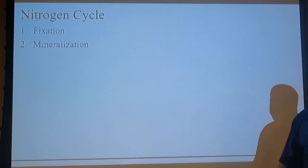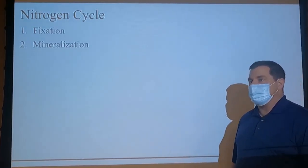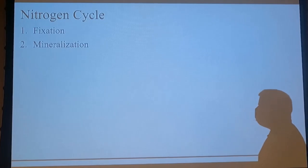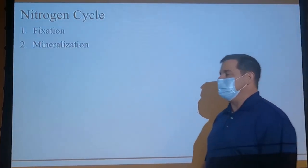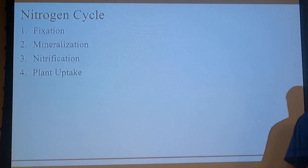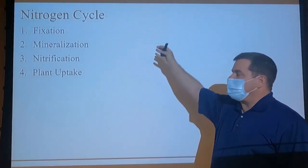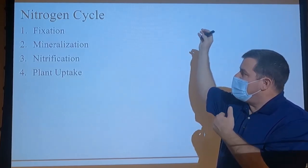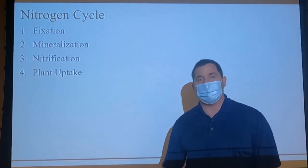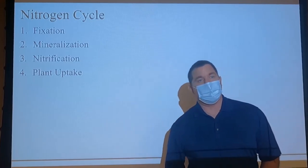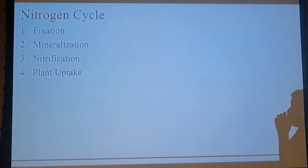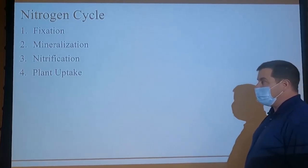Next, it will undergo mineralization — the transformation from organic nitrogen to inorganic nitrogen; you can think of that as 'M' for organic to inorganic. Within the mineralization process, one sub-process is ammonification, and that's how we get our organic nitrogen into a plant-available form such as ammonia. Once it becomes ammonium, it can undergo nitrification or be taken up by the plant. If we can keep it as ammonium, it's adsorbed to the soil and the plant has a better opportunity to take it up.